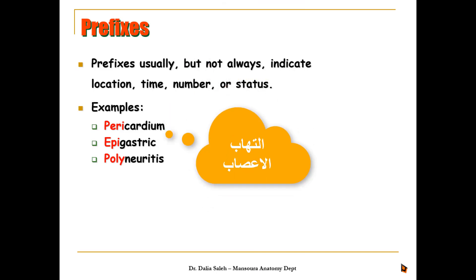Polyneuritis. Poly means multiple and neuritis means inflammation in the nerves. So polyneuritis indicates that there is inflammation in many nerves.